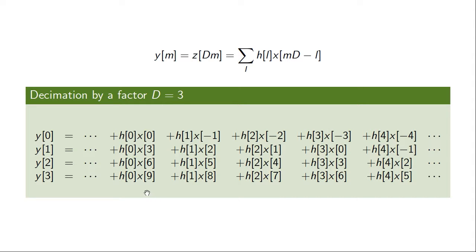Looking at this sum in more detail, it has a particular structure. For instance, H of 0 is always multiplied with X of 0, X of 3, X of 6, and X of 9 — values of X for time indices that are multiples of 3. Similarly, H of 3 is also multiplied by X for time indices that are multiples of 3. If we look at H of 1, it gets multiplied by particular values of X of n for specific times that are never multiplied by H of 0 or H of 2 — these are almost multiples of 3, but subtracted by 1, so slightly time shifted.